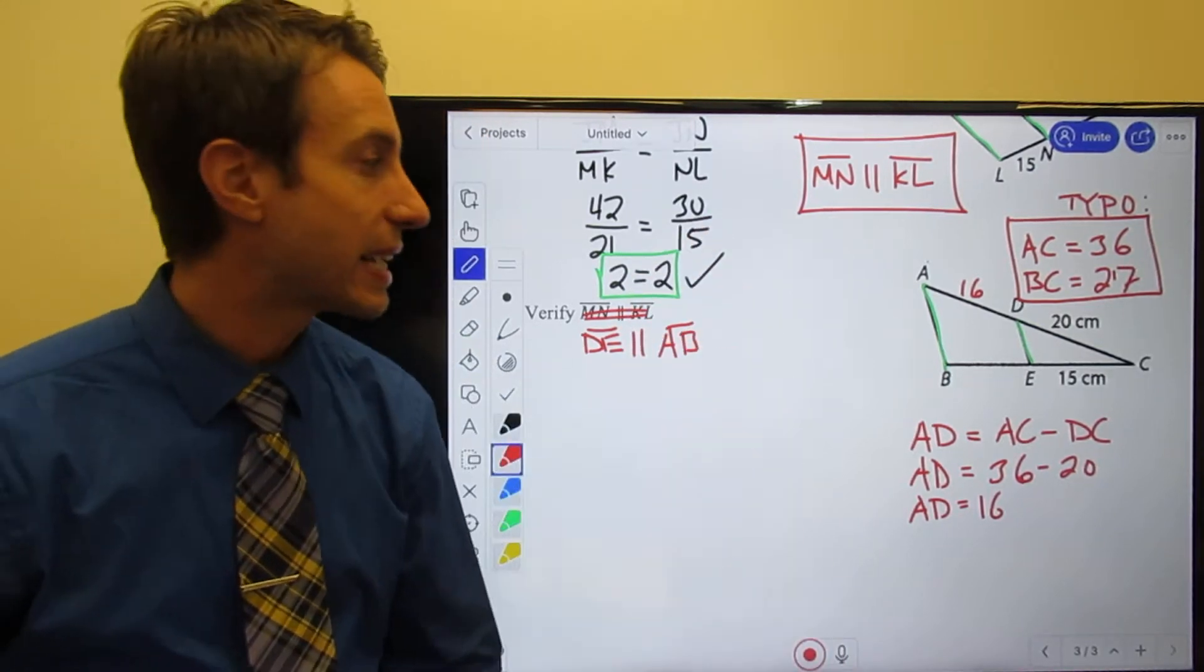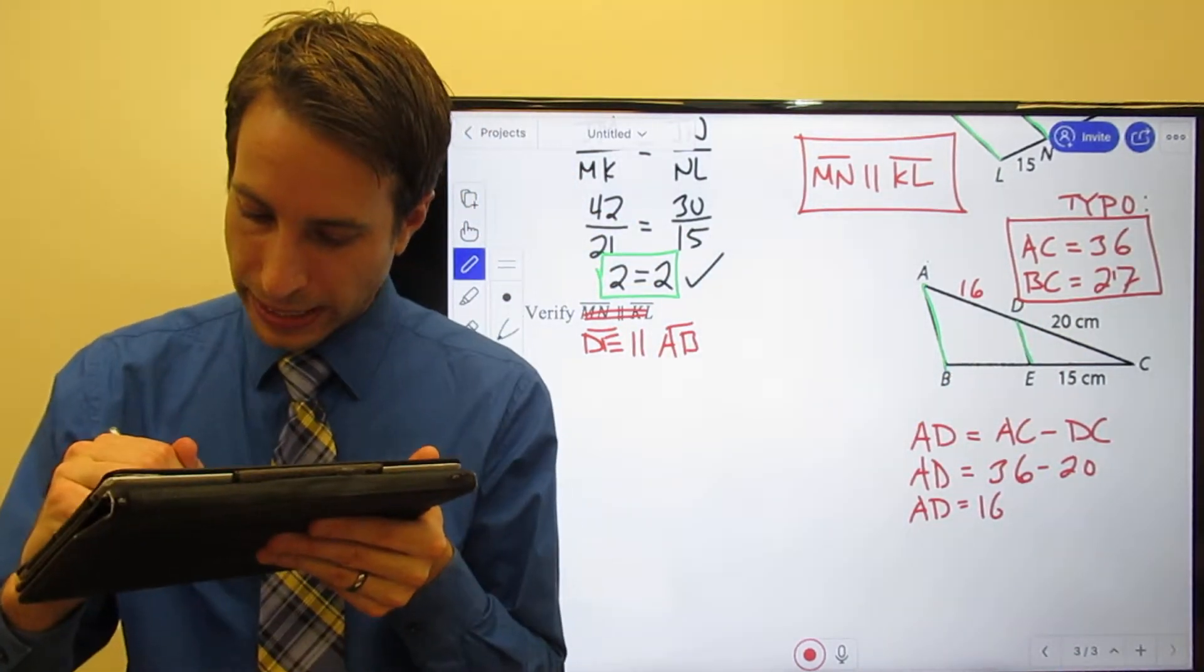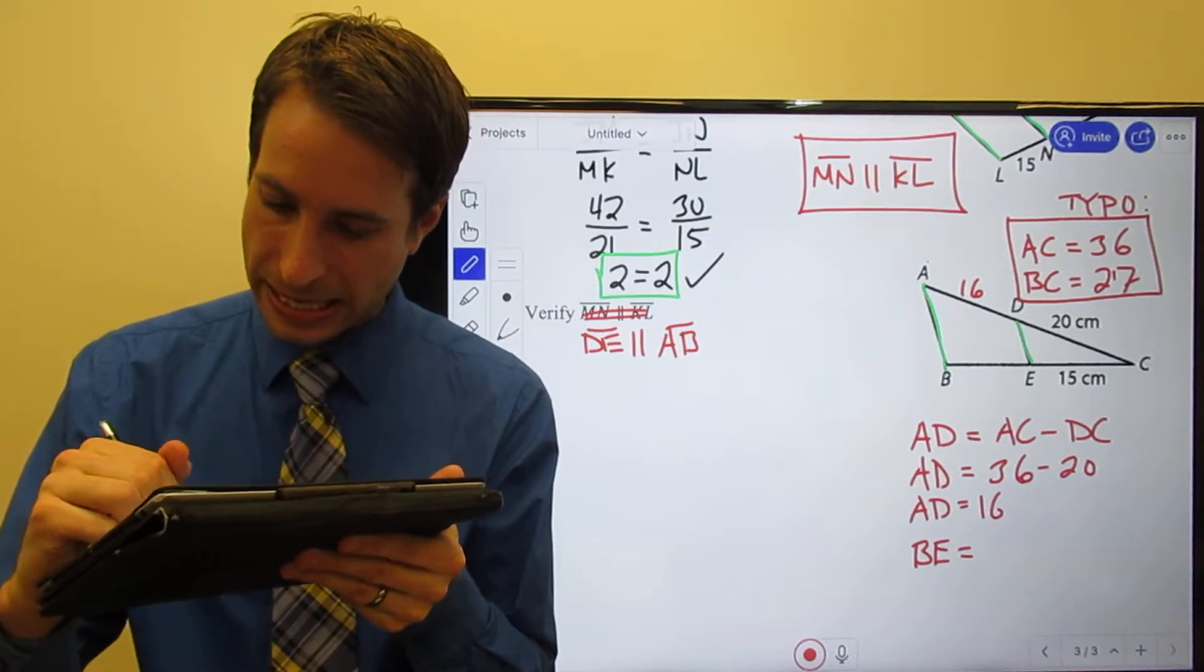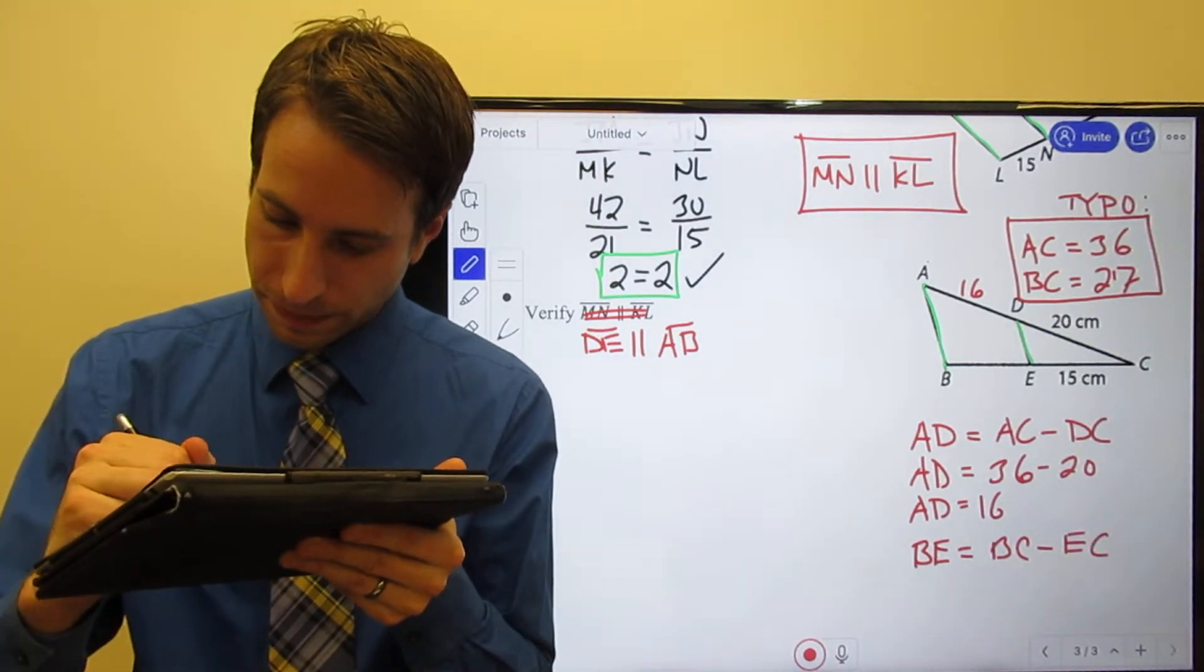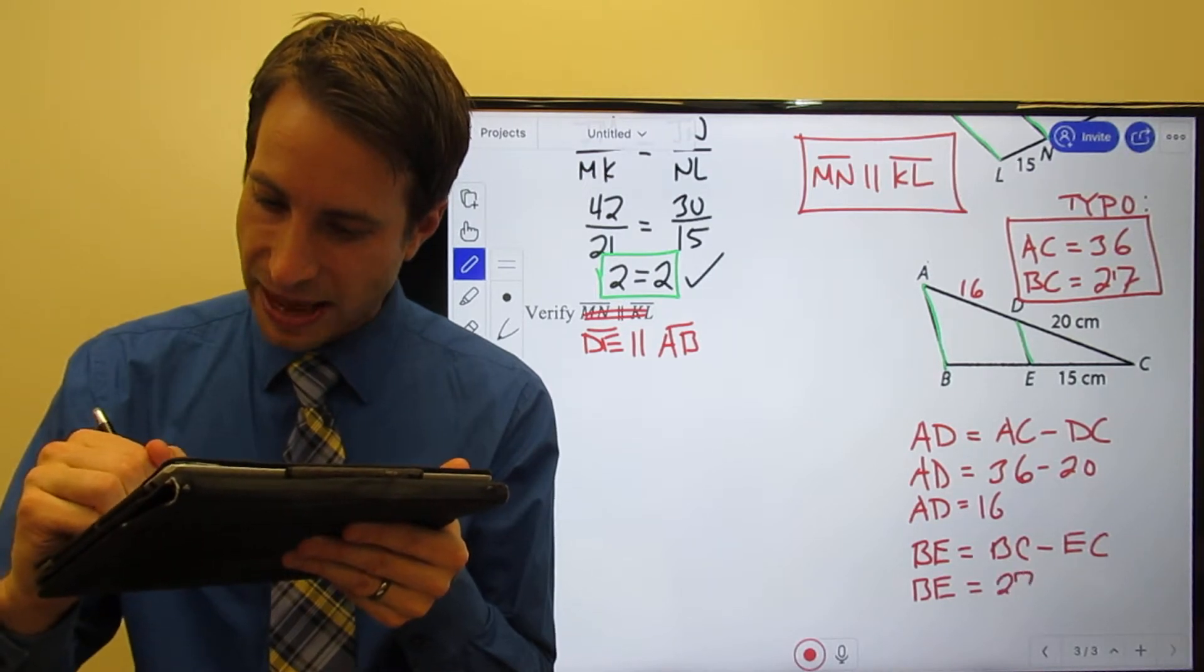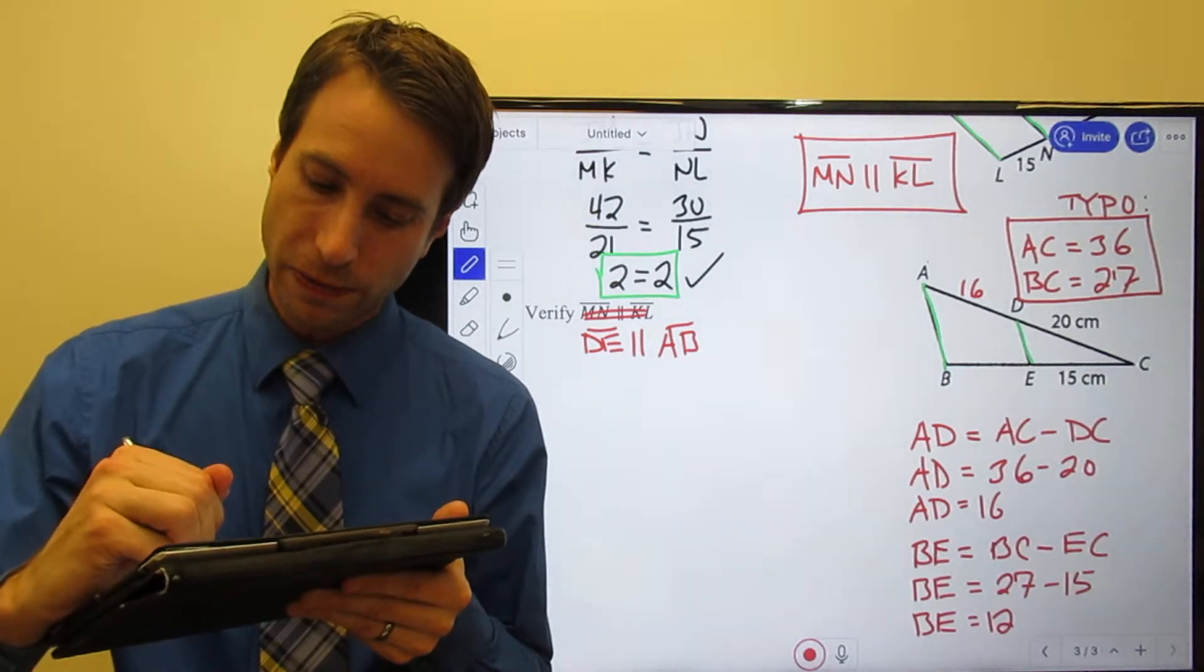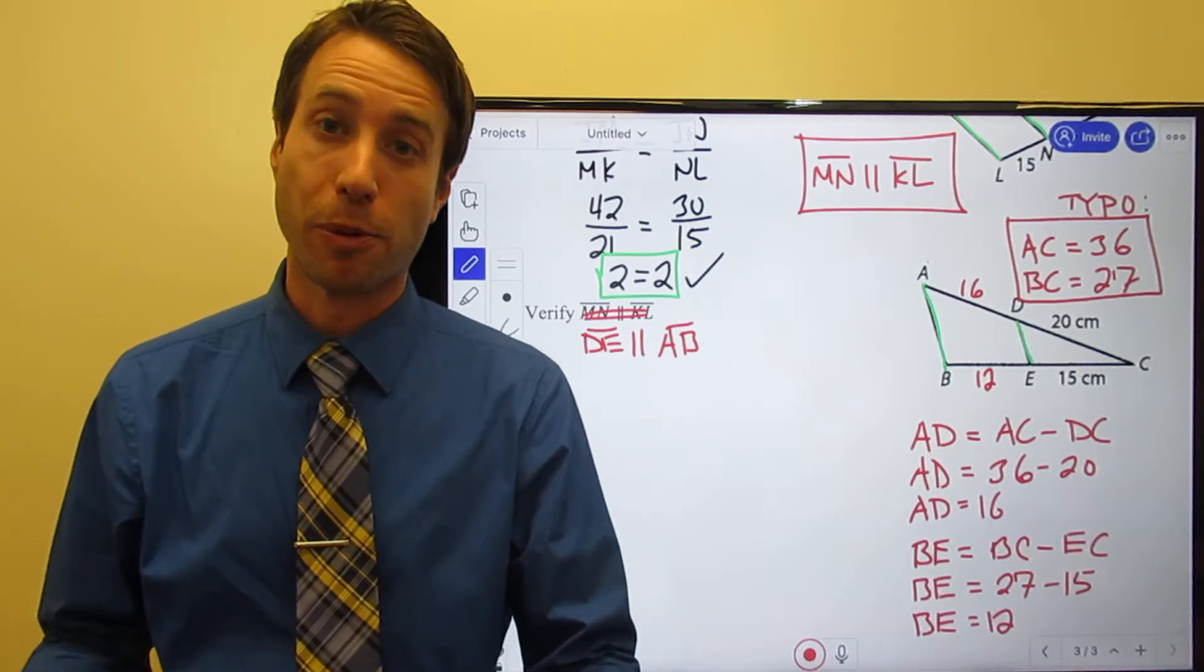Oh, we got to do it again. Look, BE. I didn't give you BE, but I did tell you BC. Okay, fine. We do it again. BC. Oh, no. Sorry. Not BC. BE. That's the one I'm looking for. I gave you BC. I want BE. So BE is equal to BC minus EC. So BE is going to be 27 minus 15, which means BE, don't fat finger something on your calculator. You should get a 12. That's what I get. I get 12. All right. Now I have all of the numbers I need set up the proportion. Let's see if we can verify this.